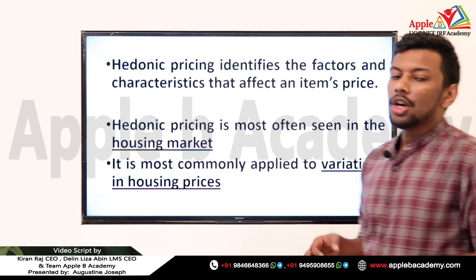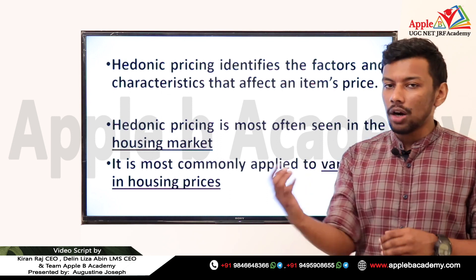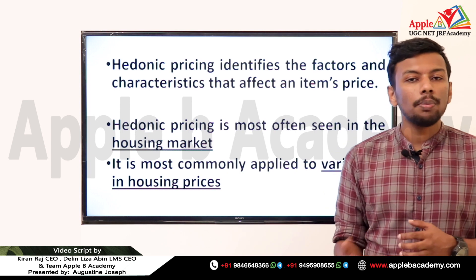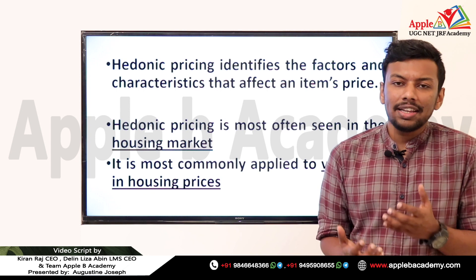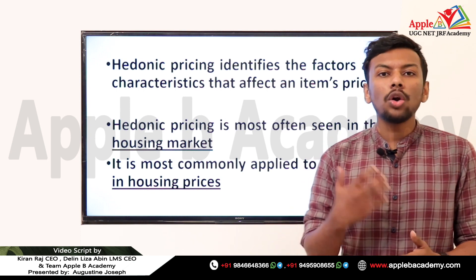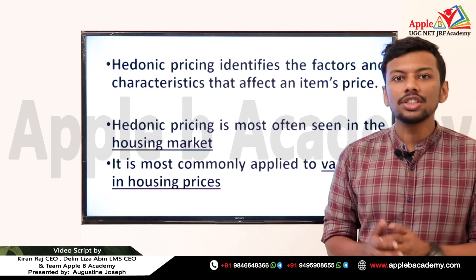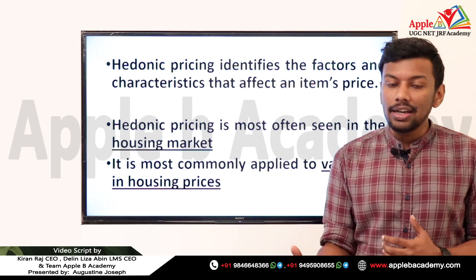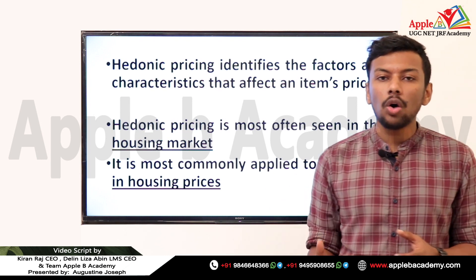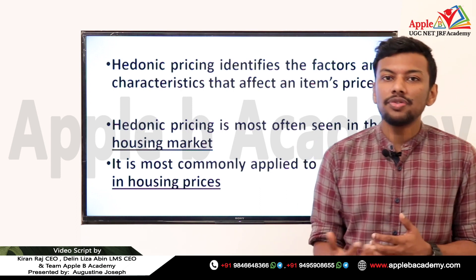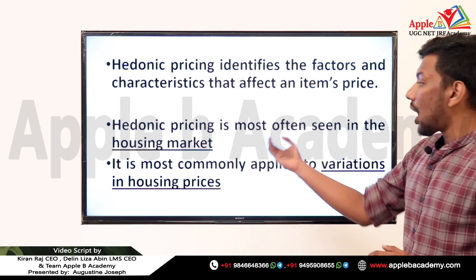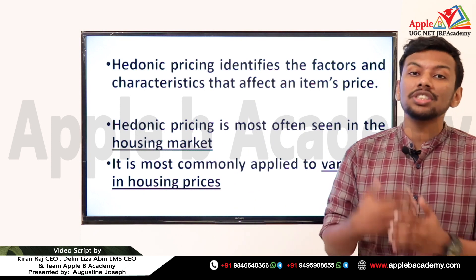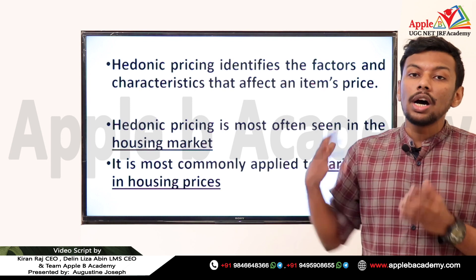Hedonic pricing identifies the factors and characteristics that affect an item's price — not just the item itself, but also the surroundings that affect its price. This method is most often seen in the housing market, because whenever someone is trying to buy a house, they also consider the surroundings: is it in the city or outskirts? Is it a serene, beautiful environment? All such factors directly affect market price. Changes in the atmosphere or environmental value may also be a reason for changes in house prices.